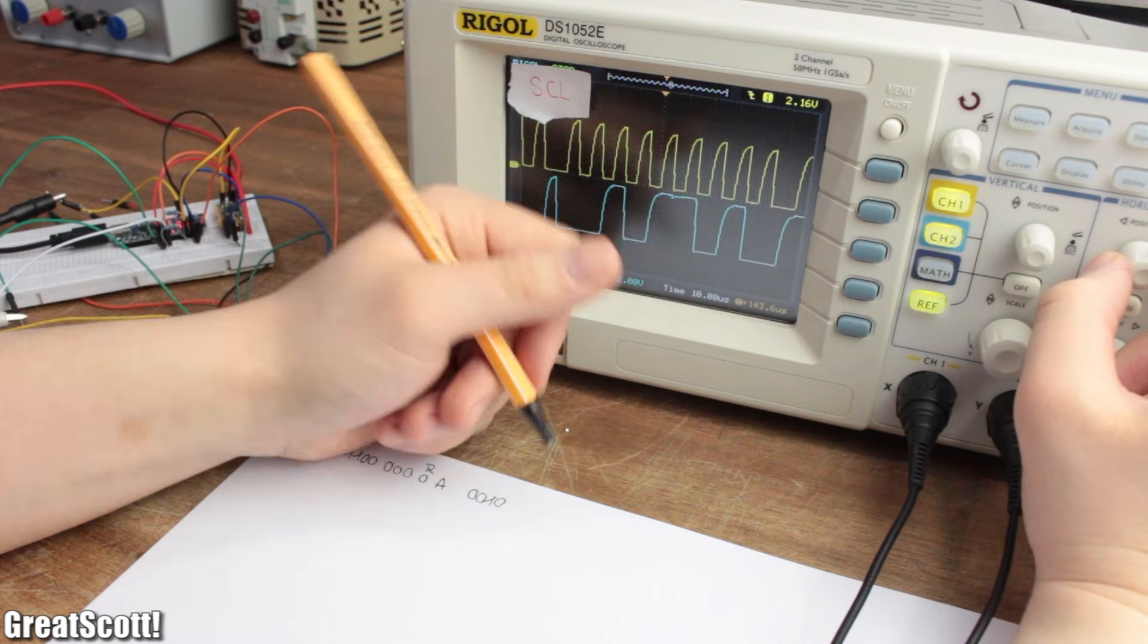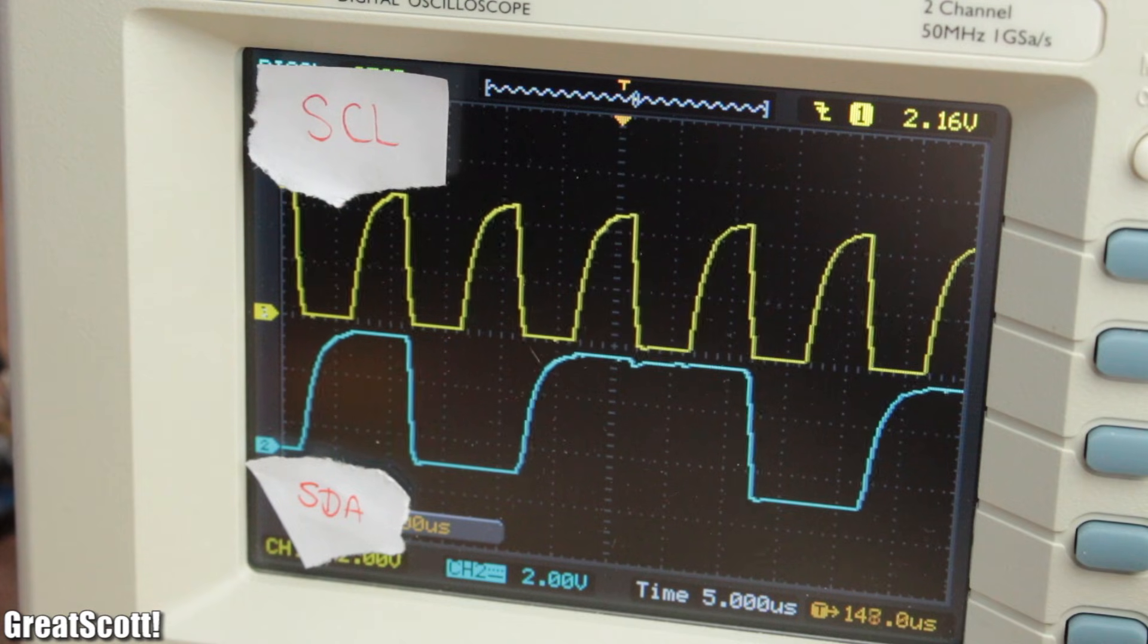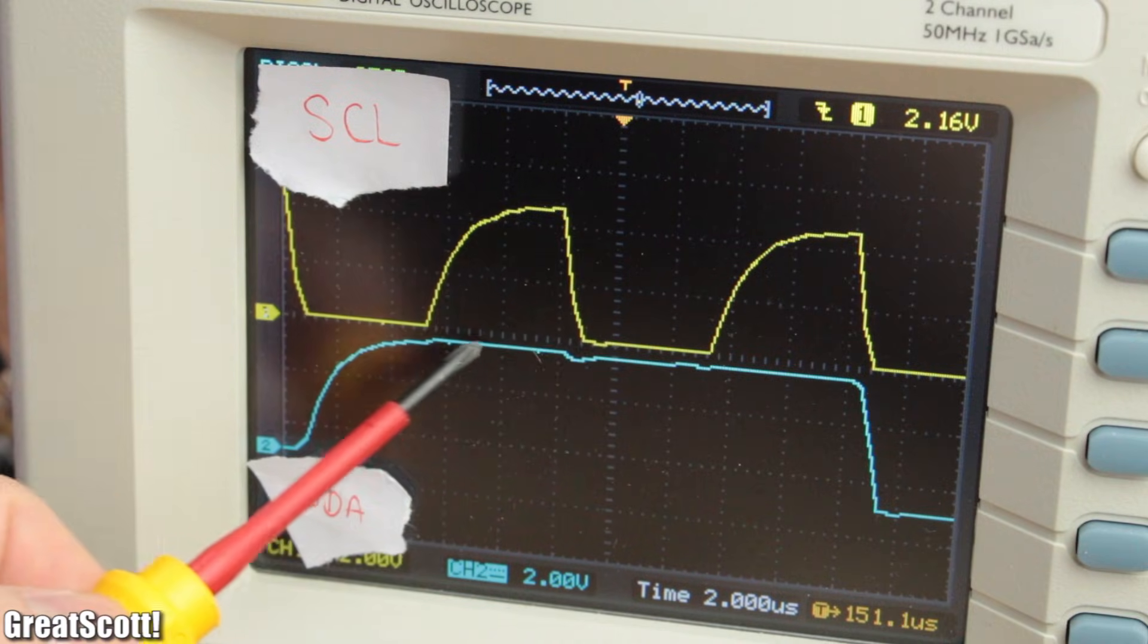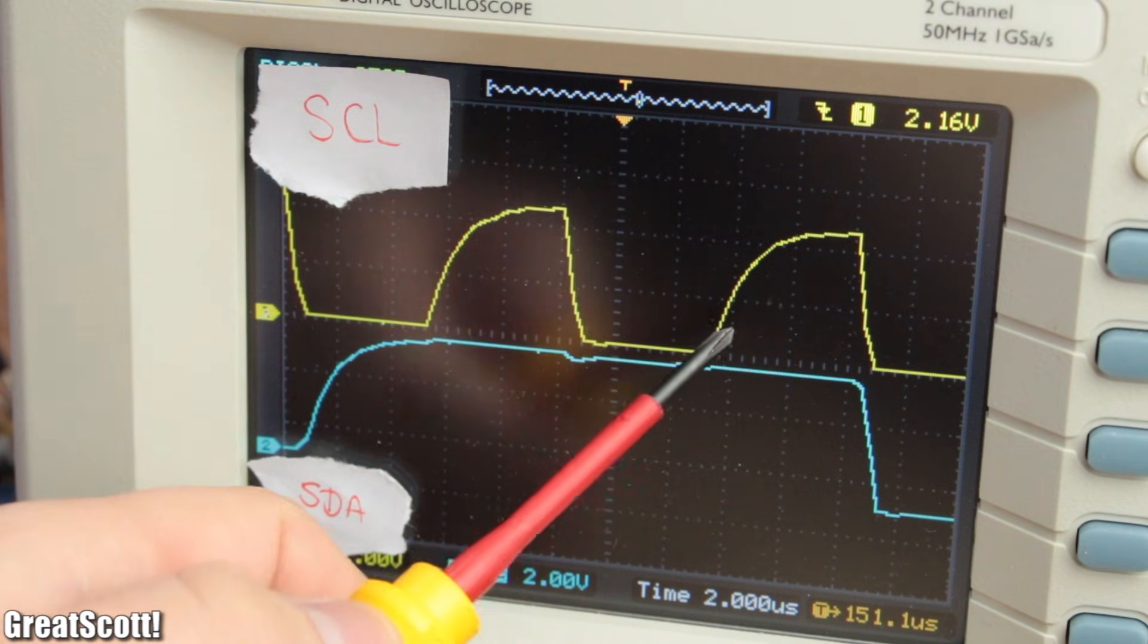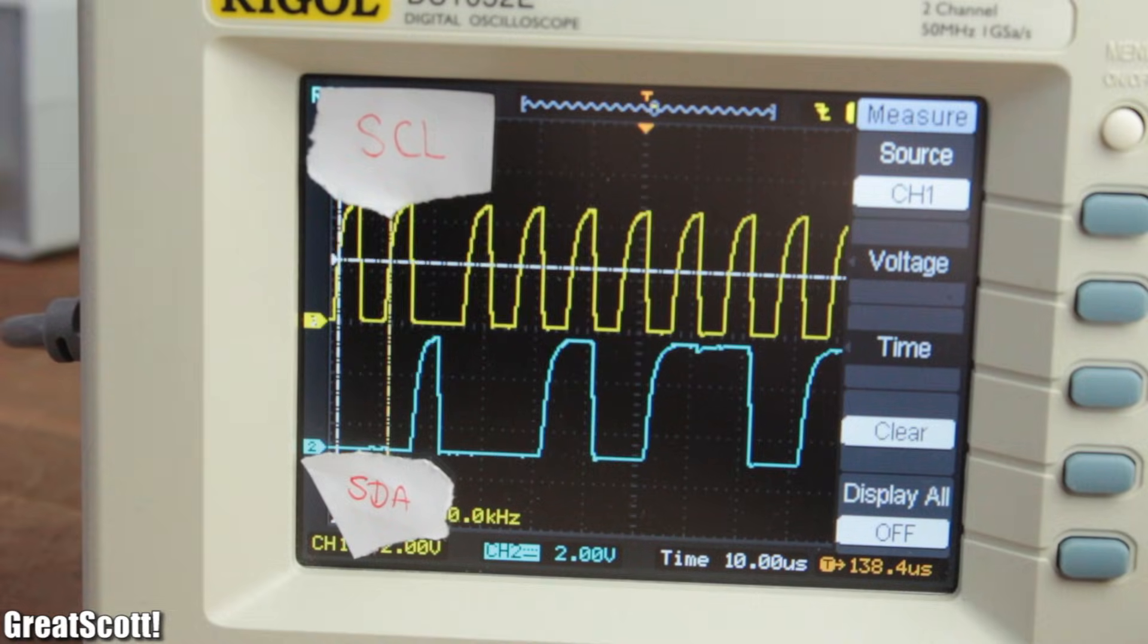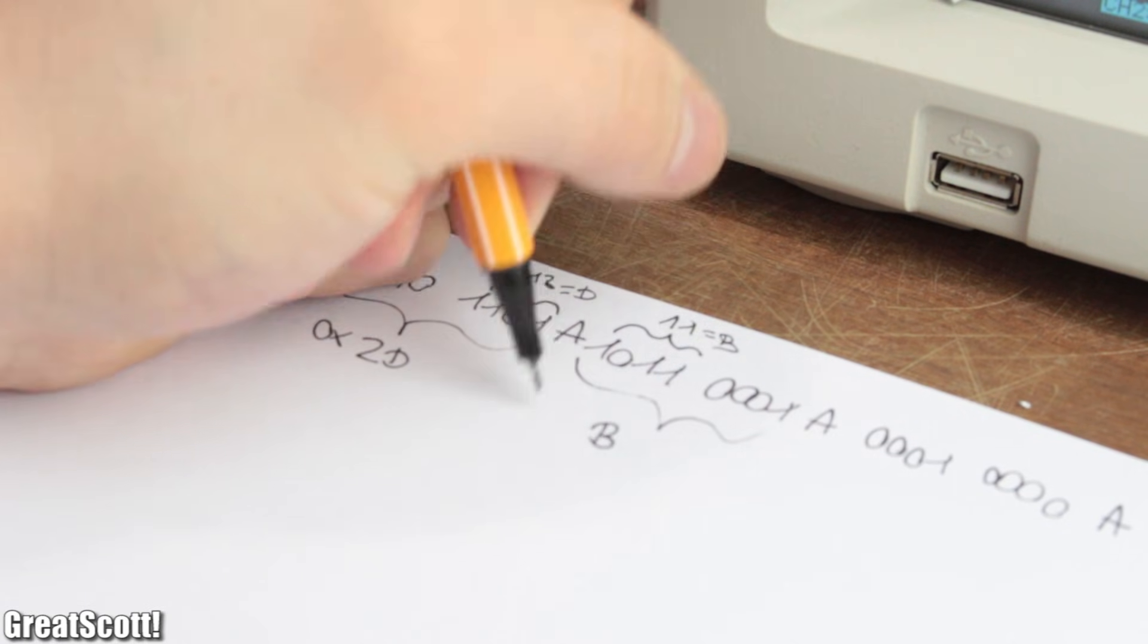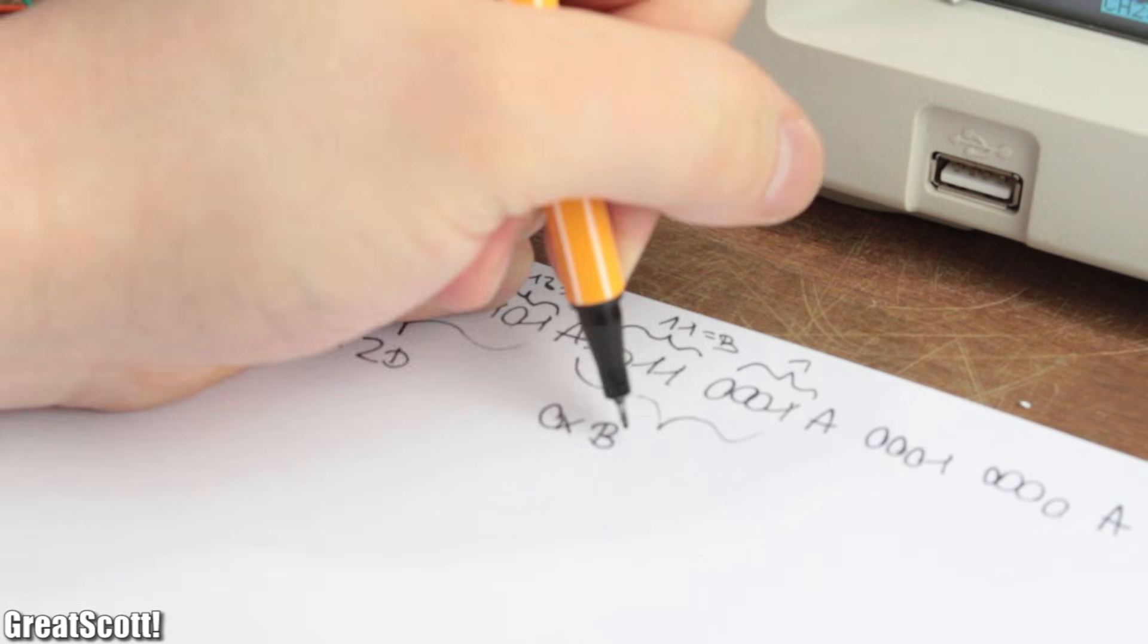And as you might already have noticed, it works just as expected. It is also a good exercise to use an oscilloscope in order to decipher the different bit states. One data bit is only valid when its state is constant high or low over the complete period of the clock pulse, which has a frequency of 100 kilohertz and is provided by the master.